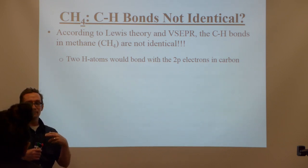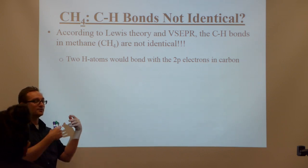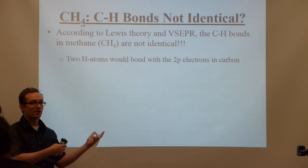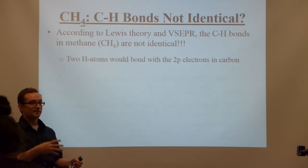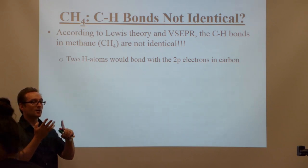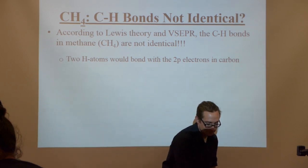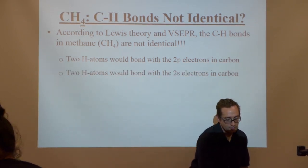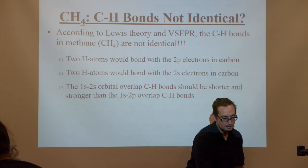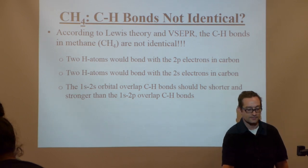If you think: I've got the 2p², I can bond with two of the hydrogens using those two P orbitals, and with the other two — the 2s electrons in carbon — those are going to bond with the other two hydrogens. Methane is CH₄. Carbon has four valence electrons, but two of them are from the S and two from the P's. Depending on what orbitals are used to bond, you'd think the bond energies would be different. The 1s–2s orbital overlap of the CH bonds would be shorter than that for the 1s–2p.